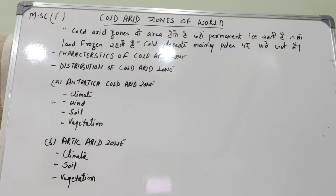Arctic polar arid zone में fauna कई groups में पाया जाता है: small carnivores जैसे fox और weasel; large carnivores जो सदैव active रहते हैं जैसे polar bear और wolf; large migrant herbivores जैसे musk ox; small herbivores जैसे arctic hare; resident birds जैसे snowy owl; migrant birds जैसे geese और ducks; flying insects, springtail, mite, और water bear। Coastal areas में water bear भी पाए जाते हैं।